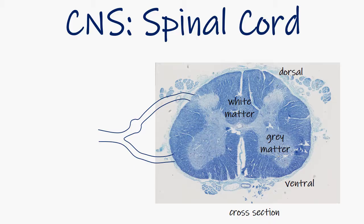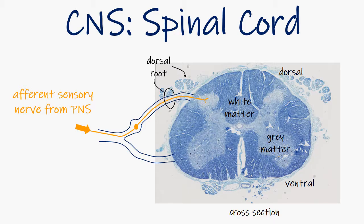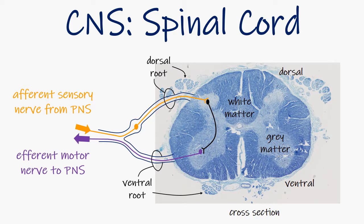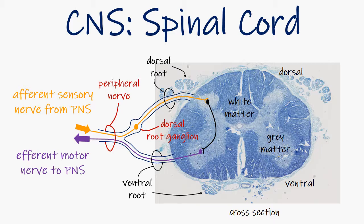Just before we move on to the peripheral nervous system, I wish to expand on and elaborate a little bit on some of the terminology that we use. An afferent sensory nerve from the peripheral nervous system enters the dorsal root of the spinal cord, synapses, and an efferent motor nerve leaves the ventral horn of the spinal cord. The entire collection of afferent sensory and efferent motor nerves compose a peripheral nerve. Before entering the dorsal root of the spinal cord, afferent sensory nerves synapse in structures called ganglia, and the dorsal root ganglion is indicated here. So keep in mind that peripheral nerves consist of sensory and motor neurons, and that ganglia are collections of nerve cell bodies.